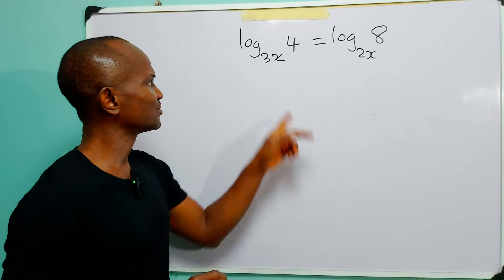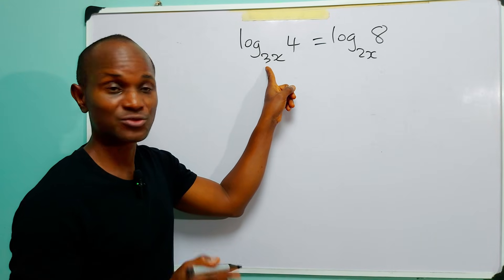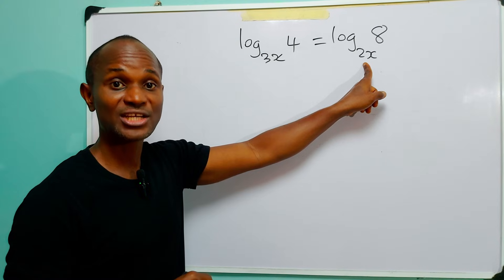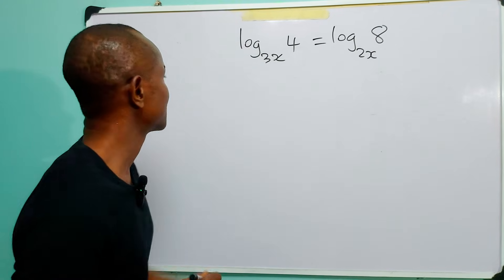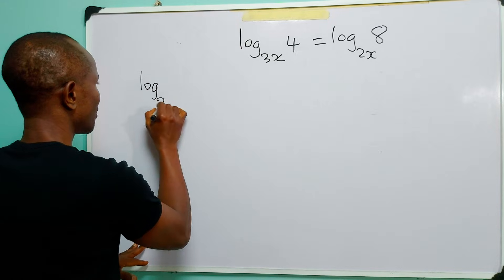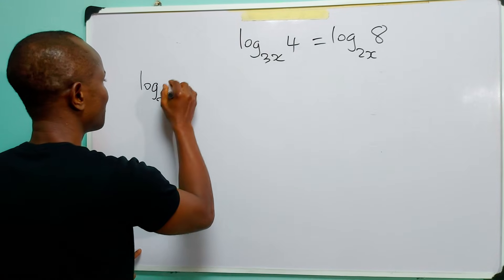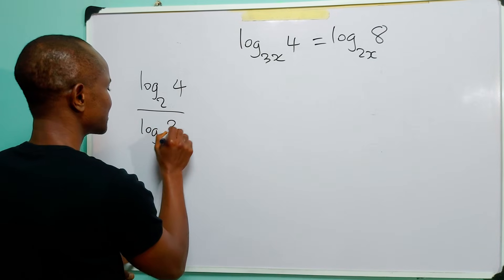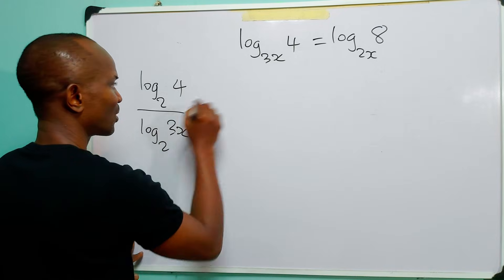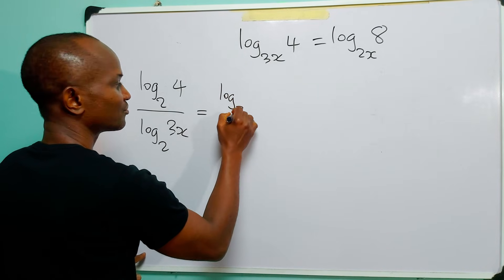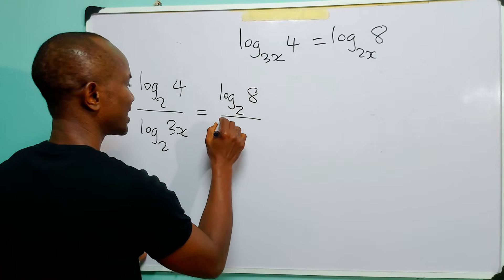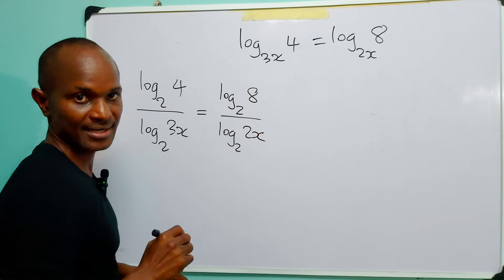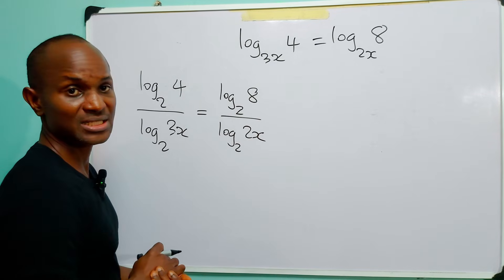So what we are going to do now is change log base 3x to base two and change log base 2x to base two using the change-of-base formula. We have: log base two of four divided by log base two of 3x, and this is equal to log base two of eight divided by log base two of 2x.